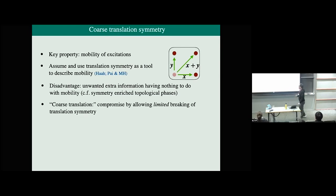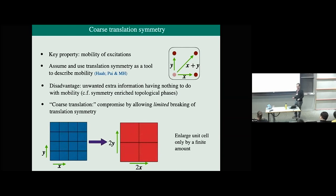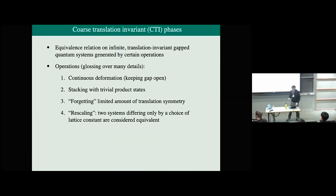The compromise is to allow some limited breaking of translation symmetry. The key idea is that we have a system with some translation symmetry and we just enlarge the unit cell by a finite amount — here we're doubling the linear size of the unit cell. For translation-symmetry-enriched topological phases in 2D, you can make a simple argument that this gets rid of all that extra symmetry enrichment information, while still letting you talk about mobility, because when talking about mobility you only really care about motion over large distances.